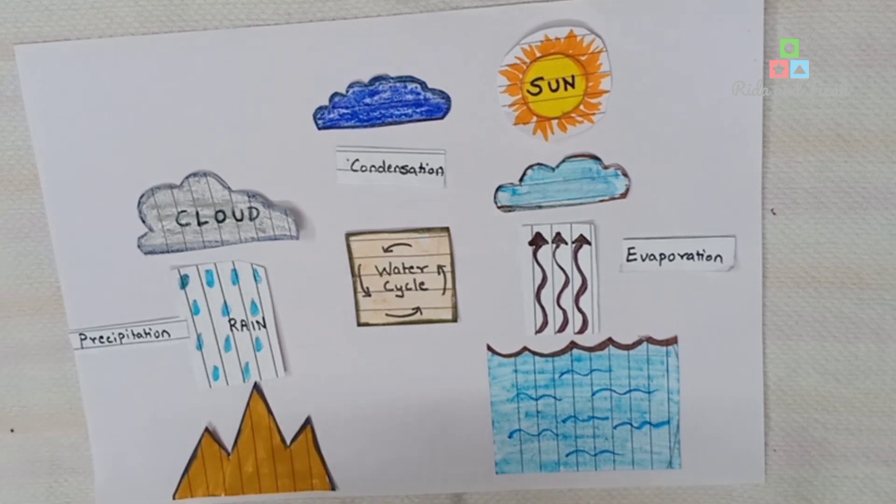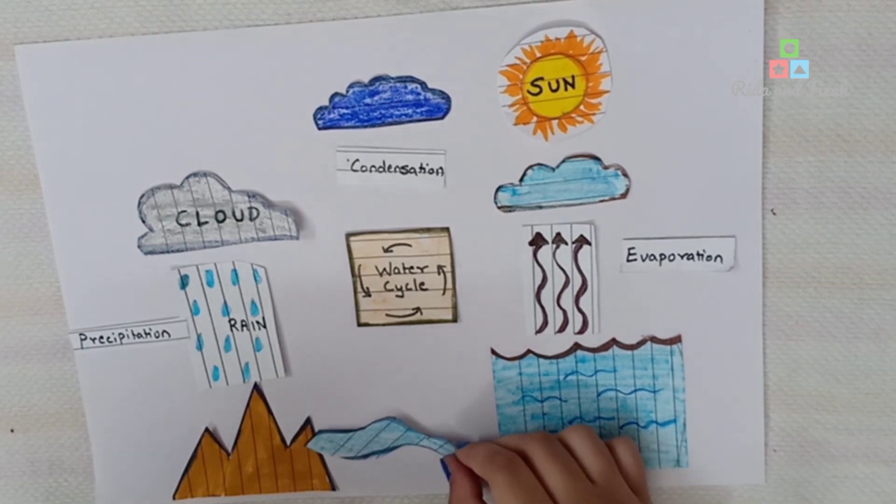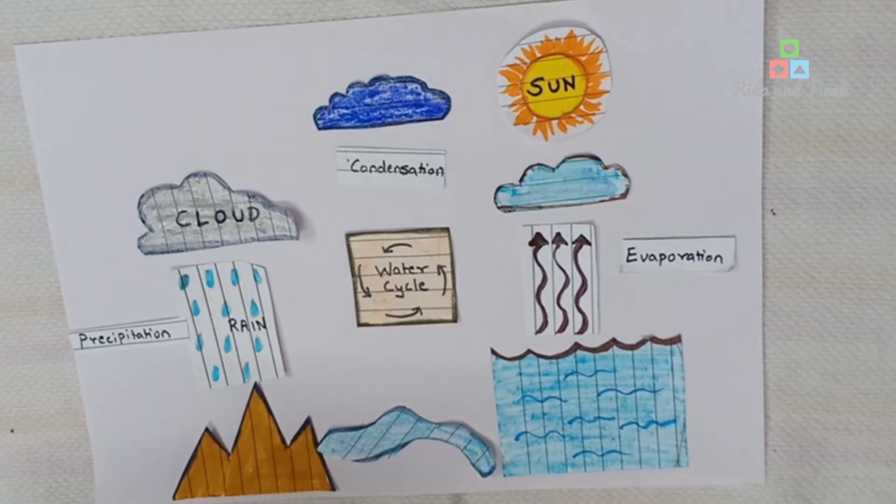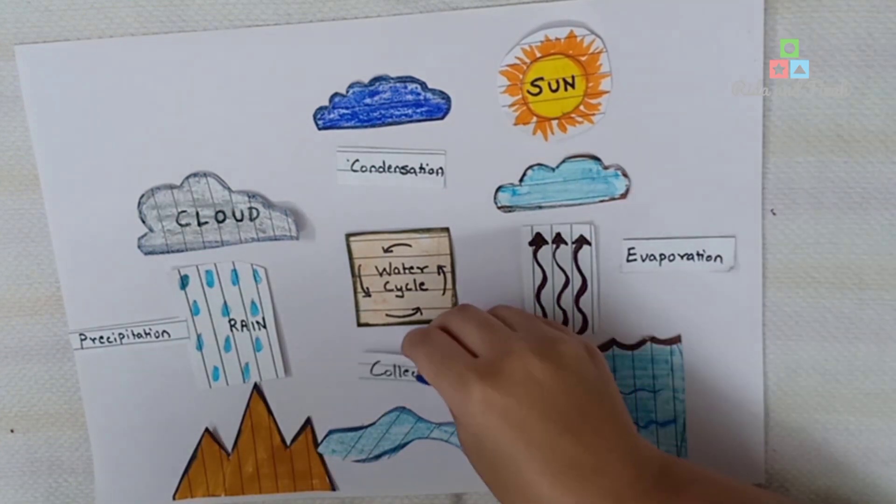The water that falls on the land gets collected in the sea or lakes. This is called collection.